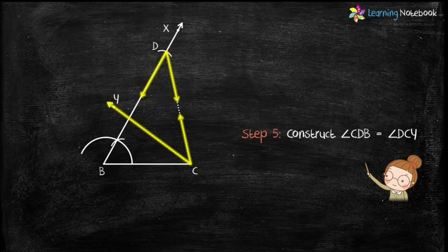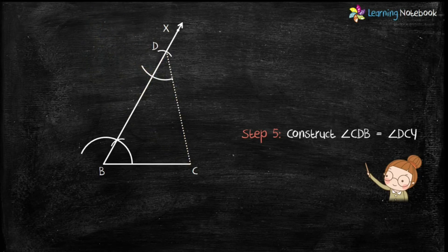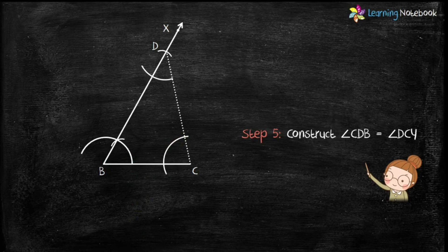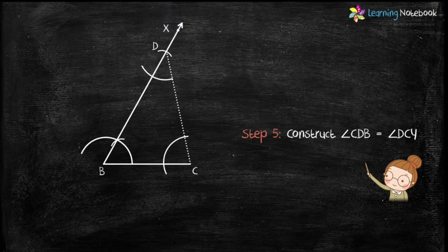Place the compass on point D and with any radius draw an arc. Now with same radius draw an arc from point C. Next, place the compass on arc drawn at point D and measure the angle CDB.